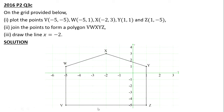Then part 3 is saying draw the line X equal to negative 2. If you want to draw the line X equal to negative 2, the negative 2 has to be the X coordinate. So this covers points like (-2, 0), (-2, 1), (-2, 2), (-2, 3), (-2, 4), (-2, -1), (-2, -2), (-2, -3), (-2, -4), (-2, -5). So our line X equals negative 2 will be that vertical line.